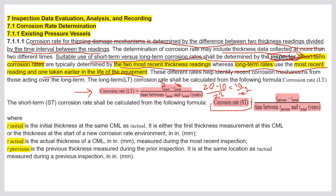For short-term, t_previous is used — the thickness from a prior intermediate inspection, not t_initial. For example, if another inspection was done in 2010 and t_previous = 15 mm, and t_actual now in 2022 = 10 mm, the time interval is 2022 − 2010 = 12 years. Short-term corrosion rate = (t_previous − t_actual) / interval. T_initial is the initial thickness at CML; t_actual is the current CML thickness; t_previous is the thickness measured during the prior inspection.